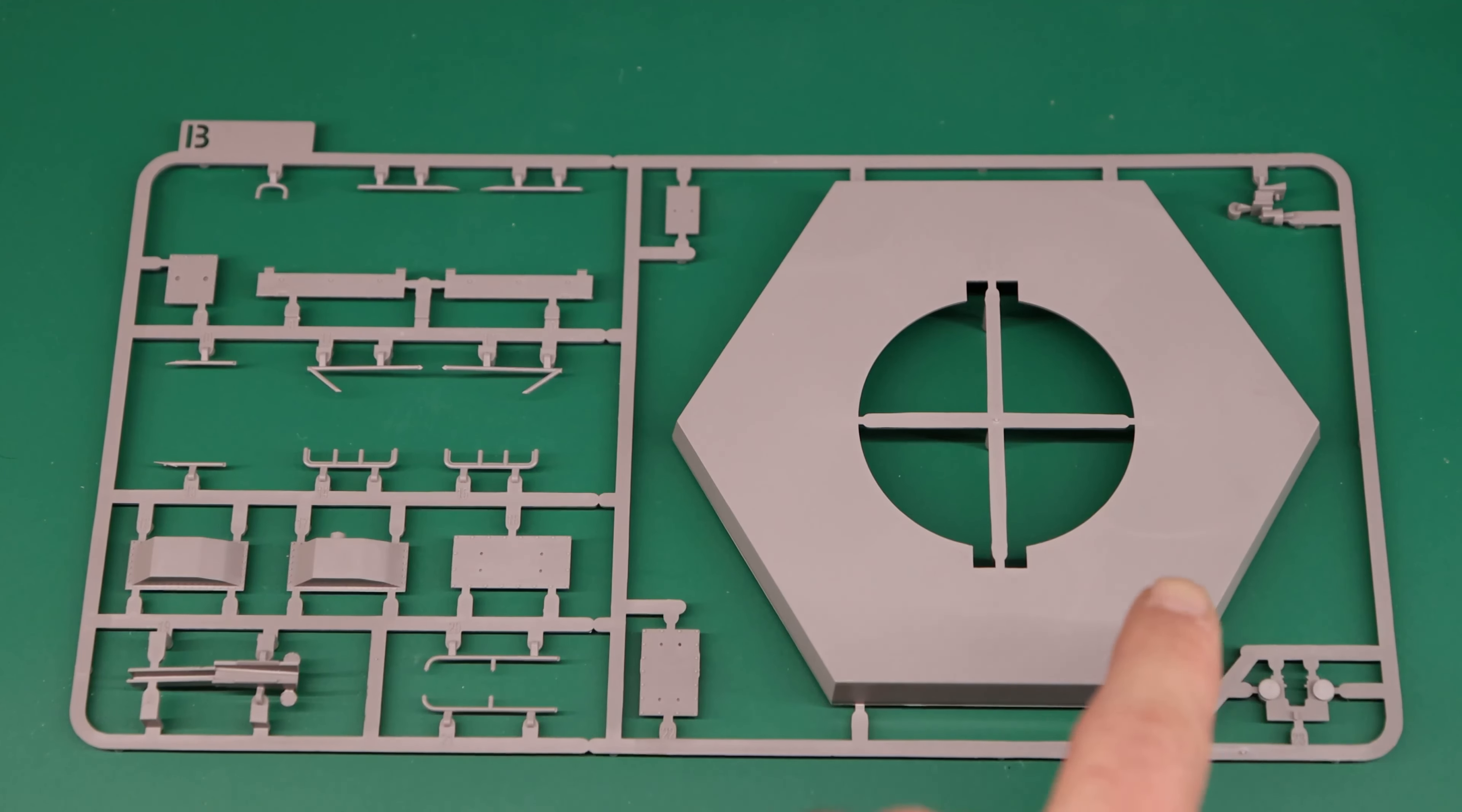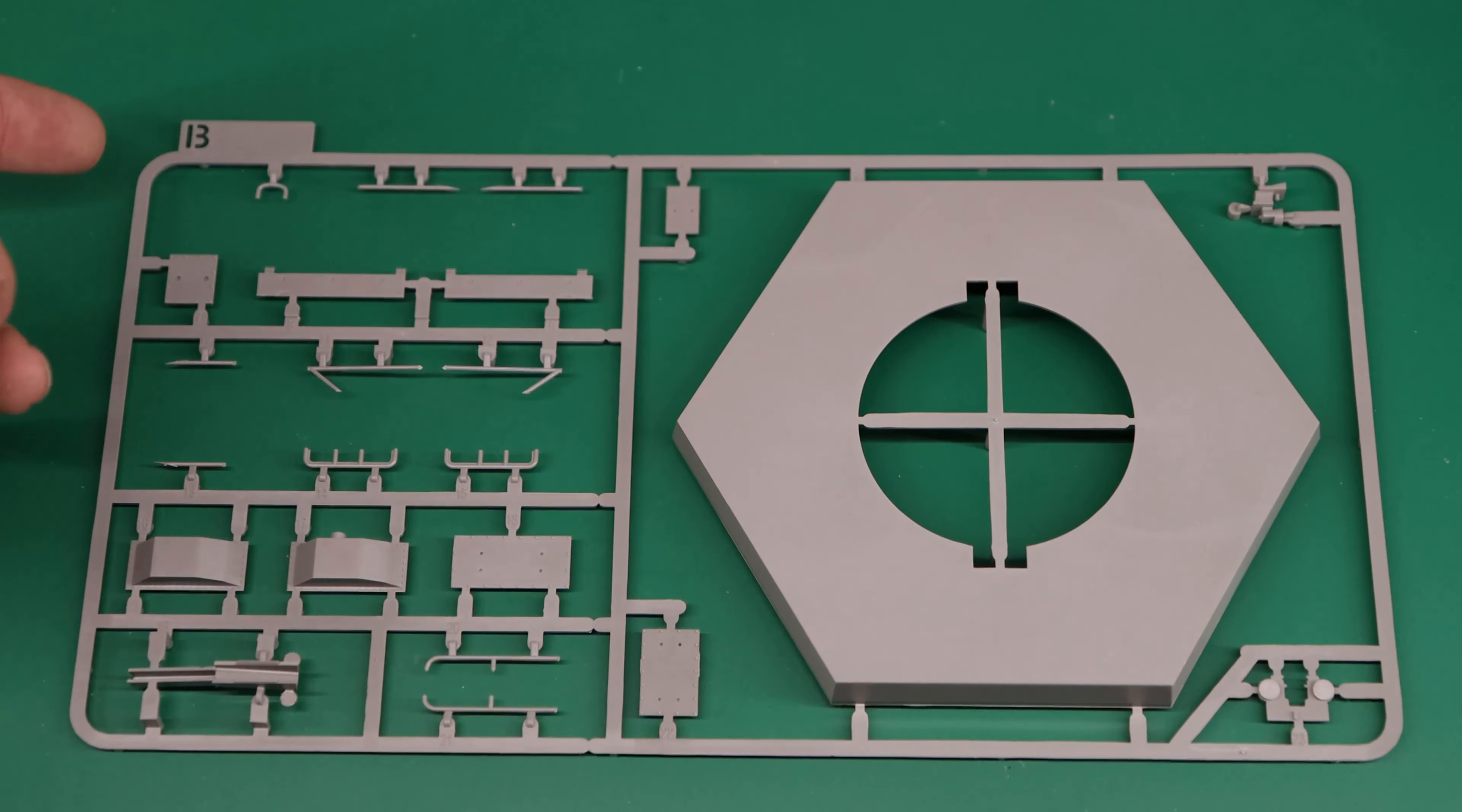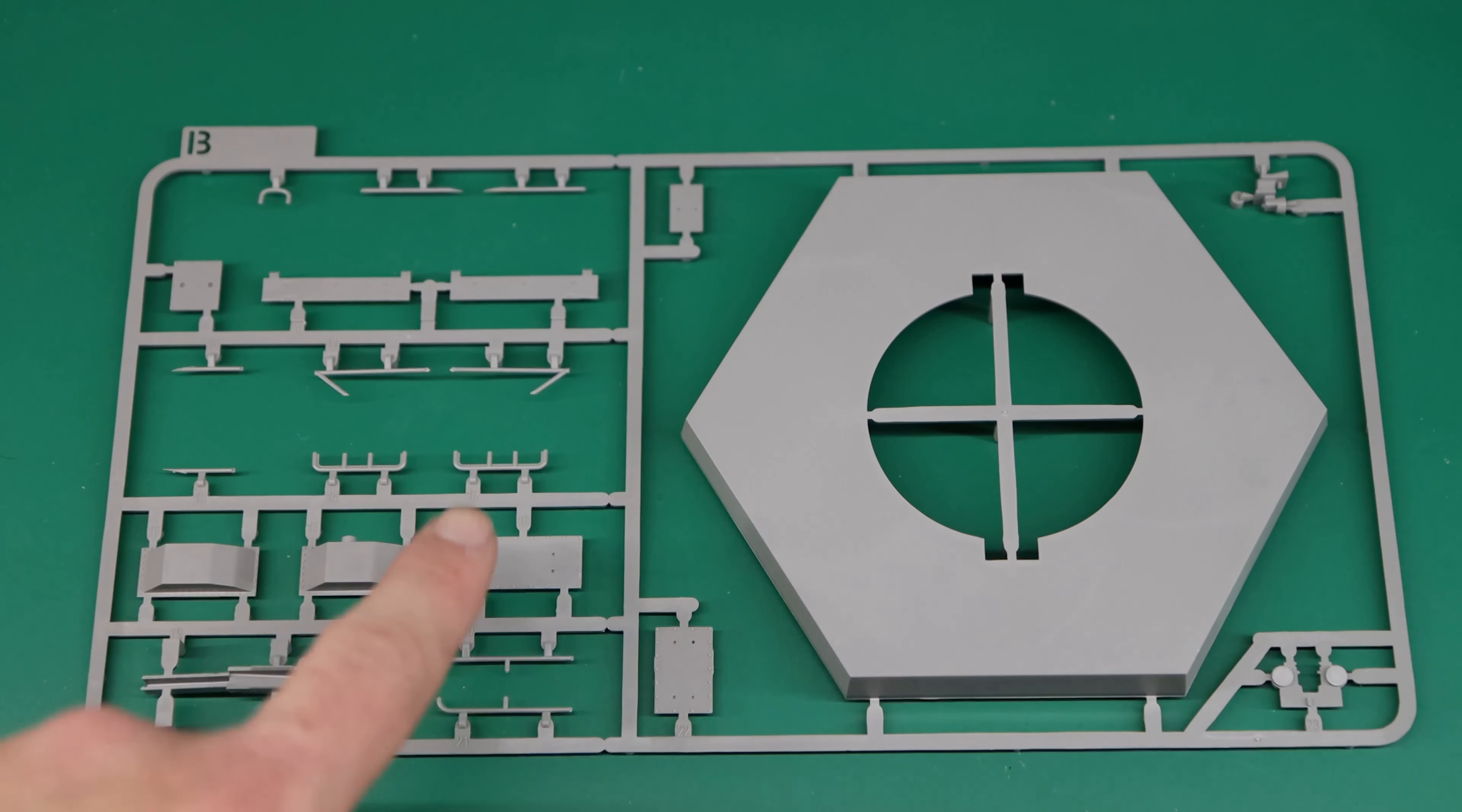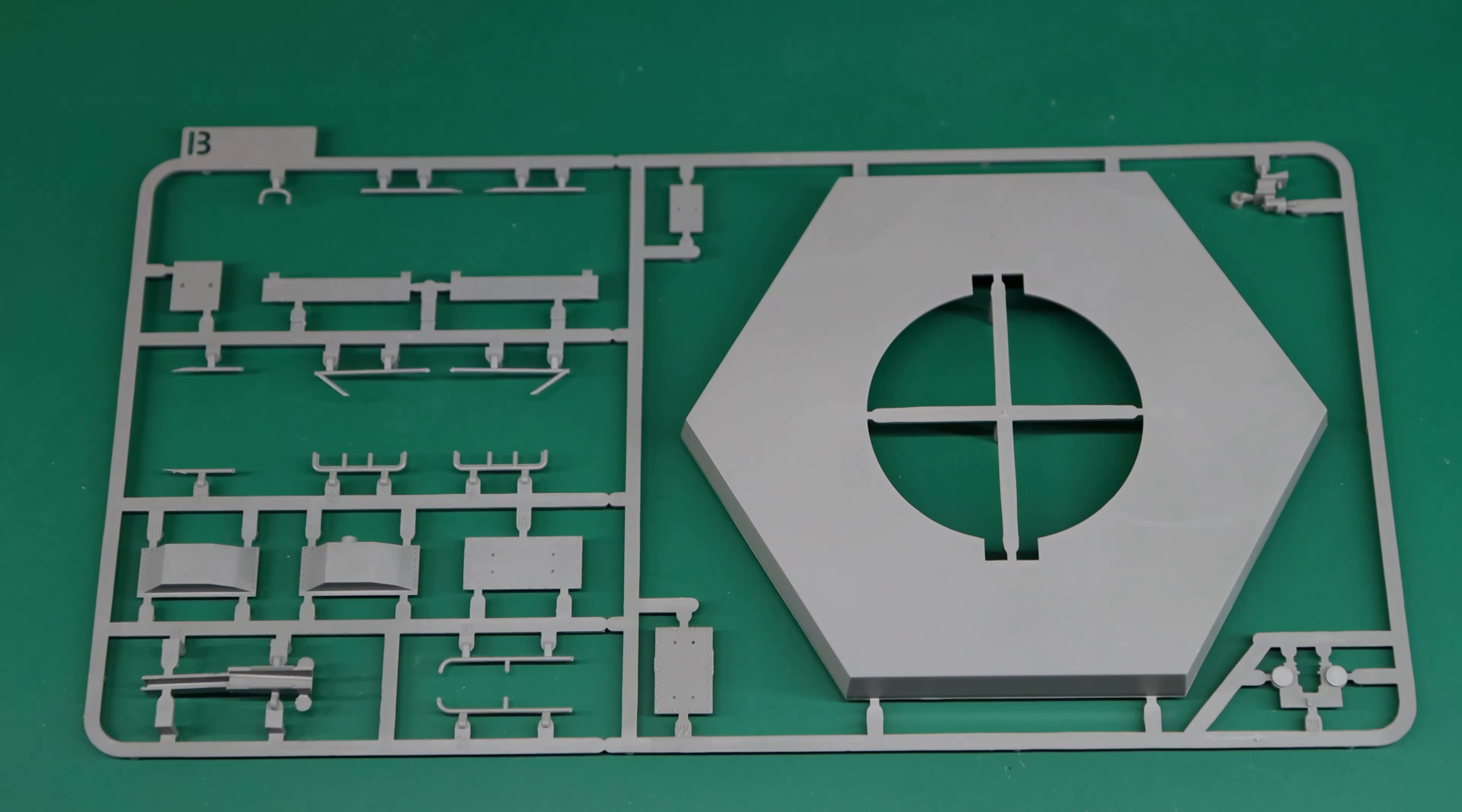The next sprue is sprue B. Here we can see the actual base of the model as well as some various details. Again it looks like some grab handles or railings and such. I believe this is part of the actual missile launcher and then some more access hatchy type stuff on that one. Nothing really crazy on this sprue.